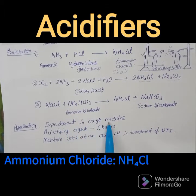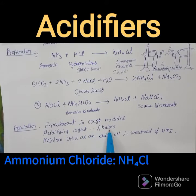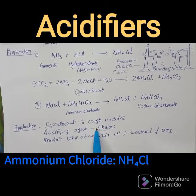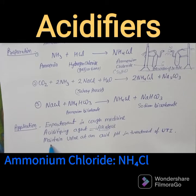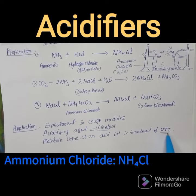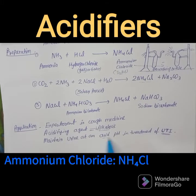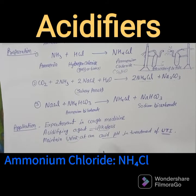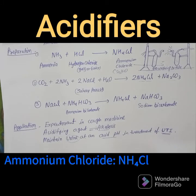The applications of ammonium chloride include its use as an expectorant in cough medicines, as an acidifying agent in alkalosis cases to reduce excess base content, and to maintain urine at an acidic pH. It is used in the treatment of urinary tract infections. Today we discussed acidifying agents — dilute hydrochloric acid and ammonium chloride. Thank you students.